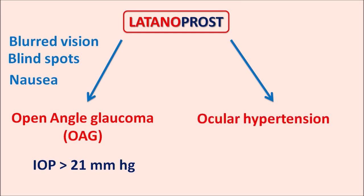Latanoprost can also be indicated in the treatment of ocular hypertension, where intraocular pressure is raised within the anterior chamber of the eye — again IOP greater than 21 mmHg — resulting in eye pain, blurred vision, and if untreated, loss of vision. Both conditions associated with raised intraocular pressure can be treated by latanoprost, as this drug increases the drainage of aqueous humor, thereby reducing intraocular pressure.